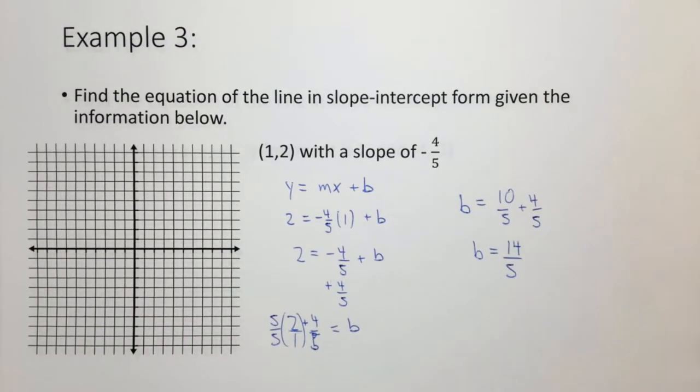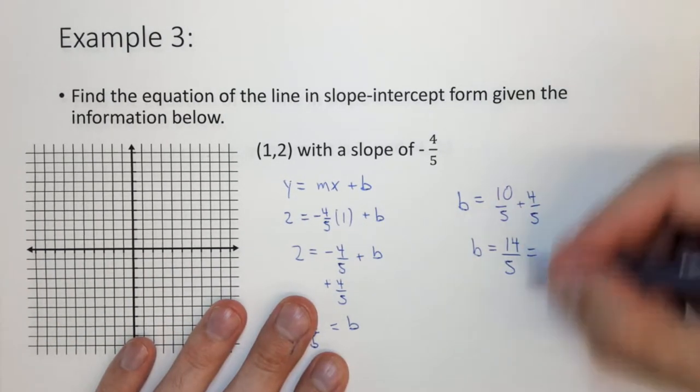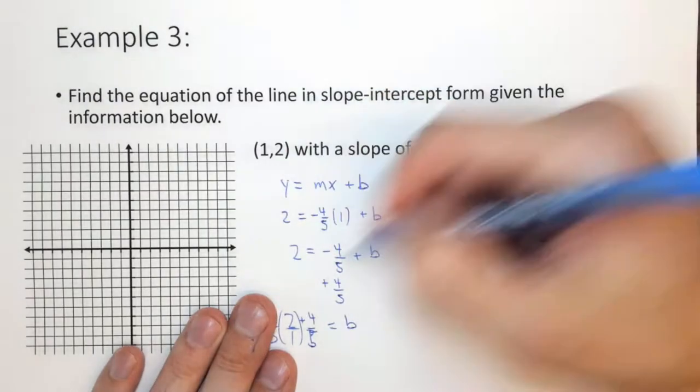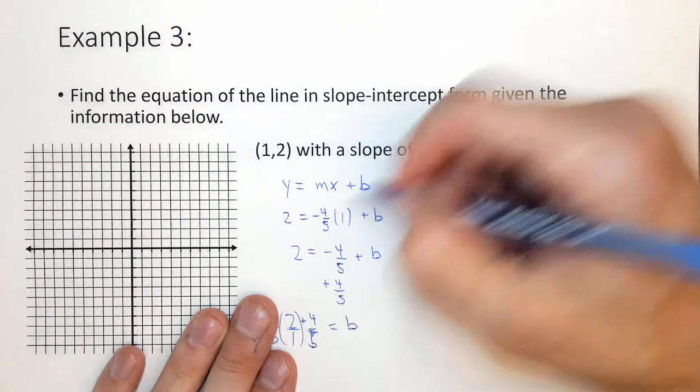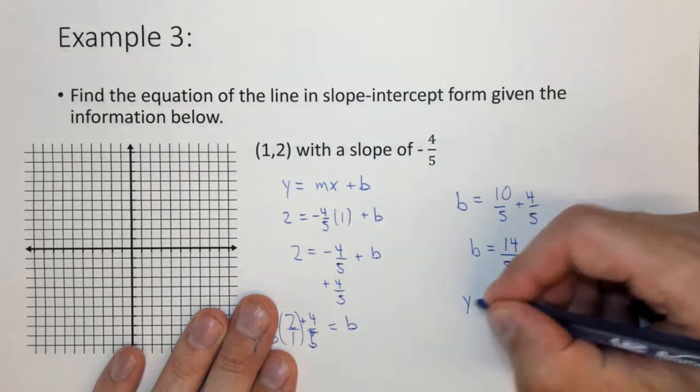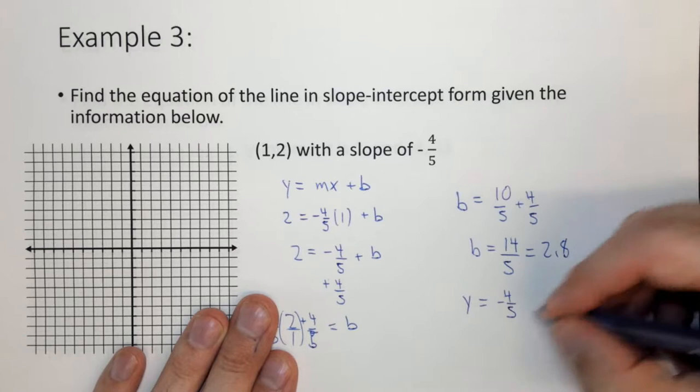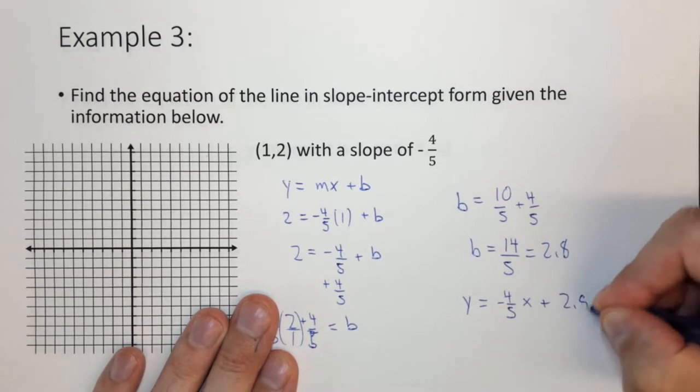I'm just gonna leave it like that. It's 14 fifths, which is just a little under 3. It's a fifth under 3, so 2.8. If you wanted to convert this to a number, it would be 2.8. Now we can find out the total equation of the line. y equals m minus 4 fifths, x plus 2.8.